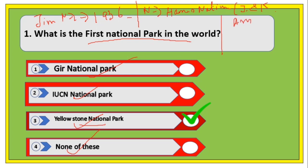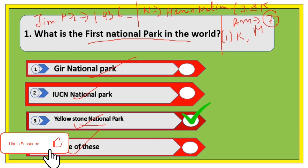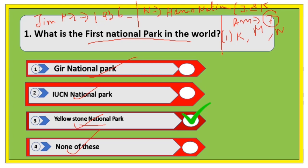How many national parks are there in Assam? There are seven national parks in Assam. They are: Kaziranga National Park, Manas National Park, Nameri National Park, Orang National Park — these are the first four, and two more were added: Dihing Patkai National Park and Raimona National Park.